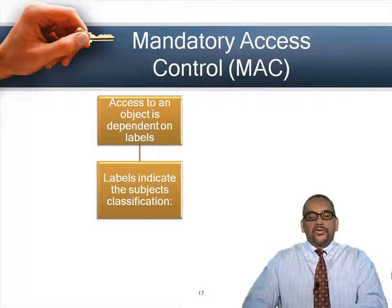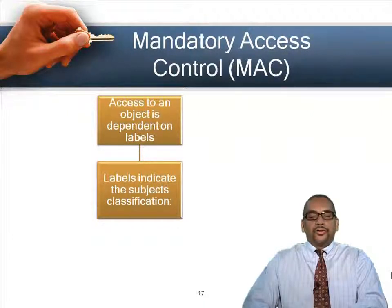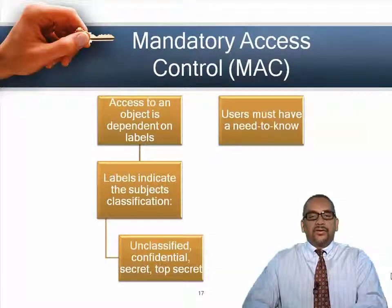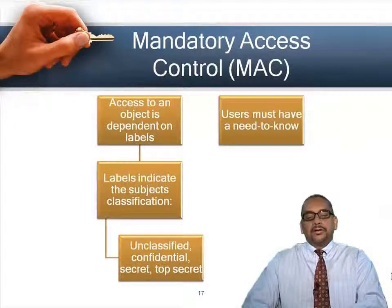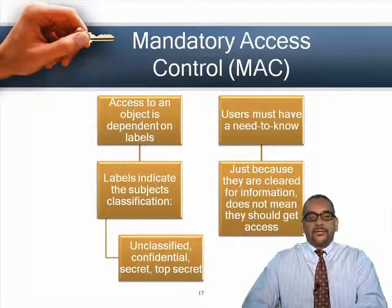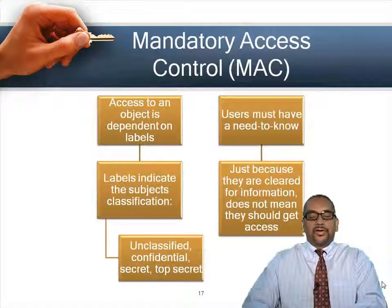In mandatory access control, objects have a label with a classification. Based on the person's security level, they can gain access. Classifications include unclassified, confidential, secret, and top secret. Someone without a high enough clearance won't be able to see something classified as top secret because their clearance level doesn't match the classification of the object. Also, just because someone is cleared for information doesn't mean they have access — there is still the need-to-know basis.